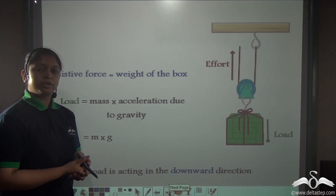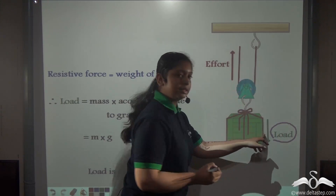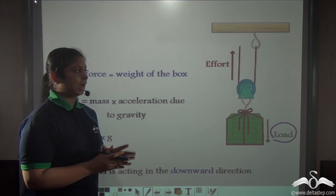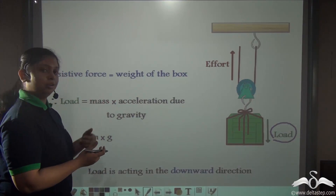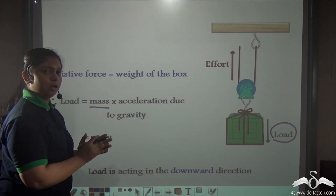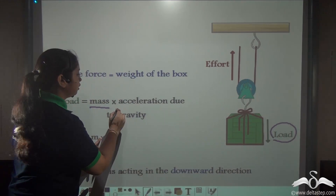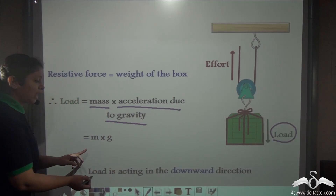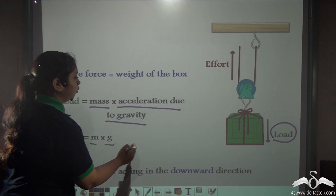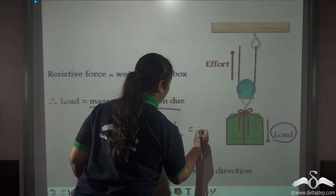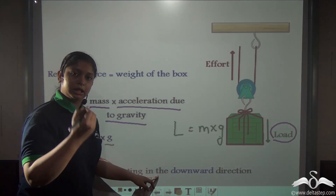The resistive force which needs to be overcome is the load. Load can be defined as the weight of the box — the mass of the box multiplied by the acceleration due to gravity acting downward. Mass is denoted by m and acceleration due to gravity by g, so load can be written as m × g, acting in a downward direction.